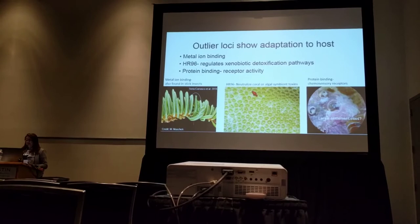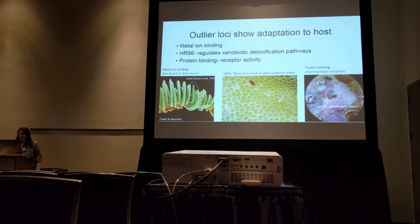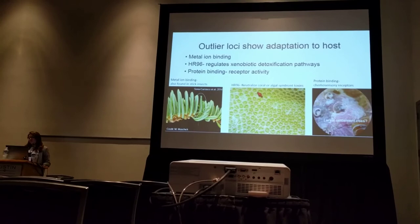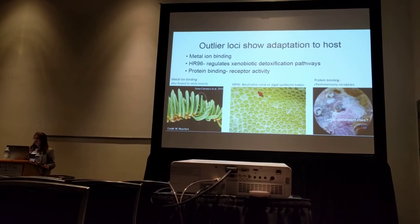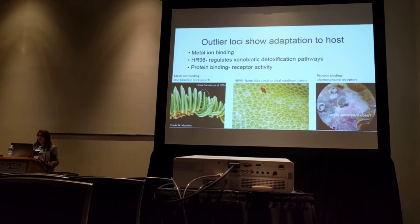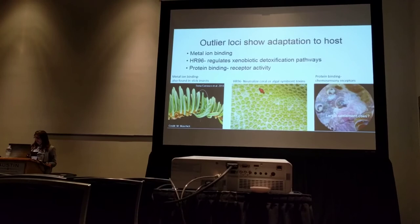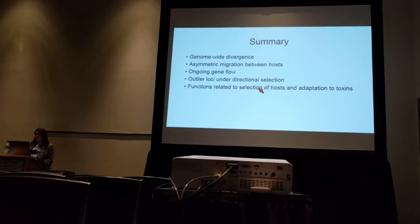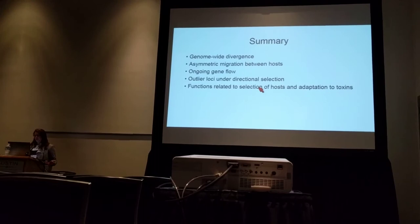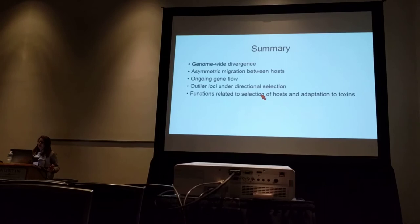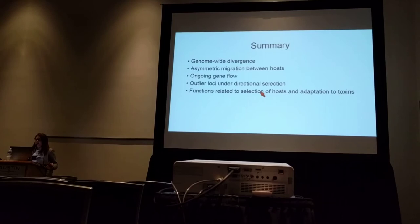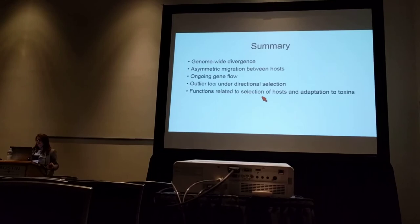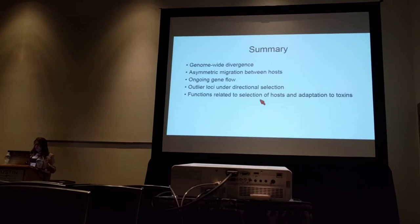The other six outlier loci with identifiable functions had to do with protein binding, and one was involved in receptor activity. Some ideas about what this might involve are chemosensory receptors that larvae might be using to sense settlement cues, or that adults might be using to sense differences in host corals. In summary, we've shown genome-wide divergence in populations of snails on different coral hosts, asymmetric migration from Pritis lobata to Pritis cylindrica, ongoing gene flow between both hosts, and outlier loci likely related to host selection and toxin adaptation.